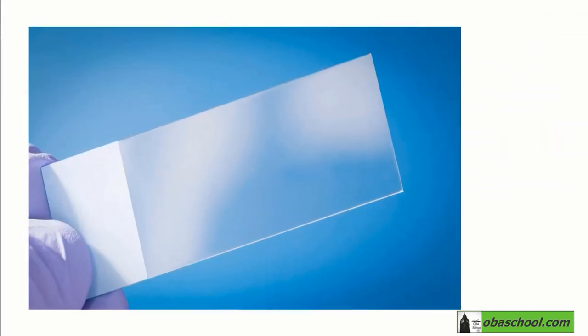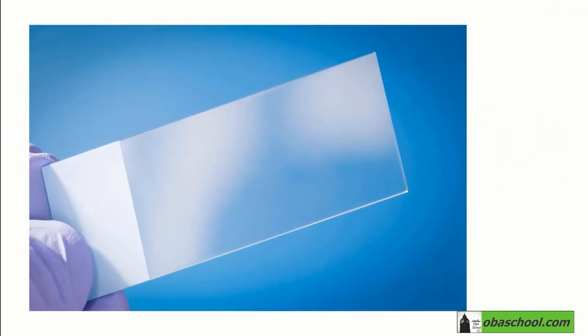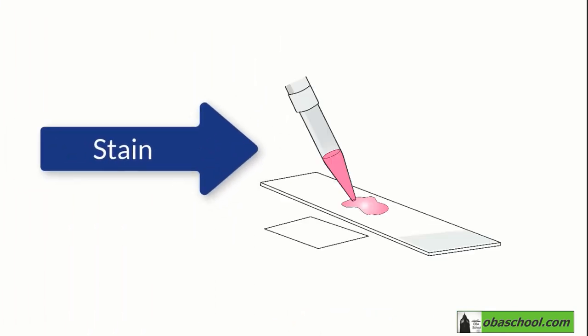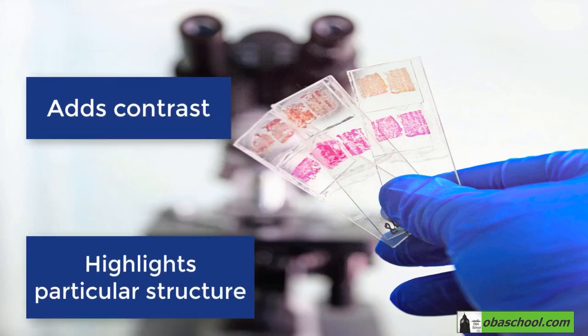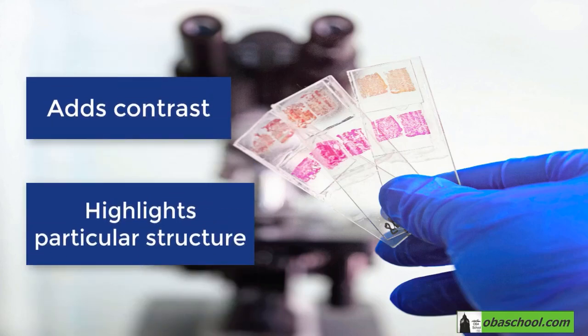Now, since cells are transparent, we should stain the slide in order to add contrast to these samples, which highlights particular structures.